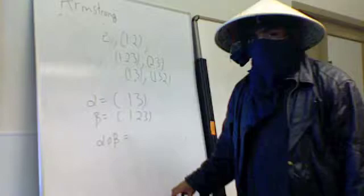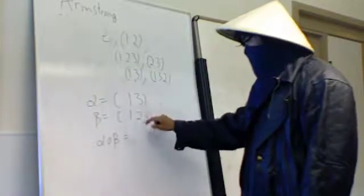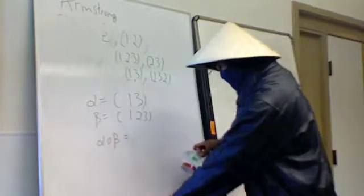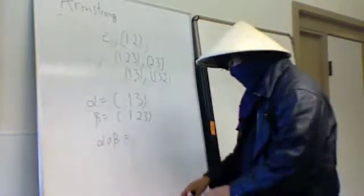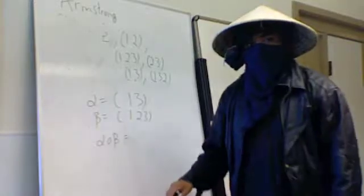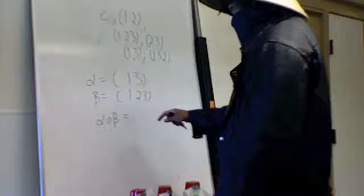So, I take first beta: 1 goes to 2, so 1 goes here. 2 goes to 3, and 3 goes back to 1. Here we go. So this is a new order. That's beta.